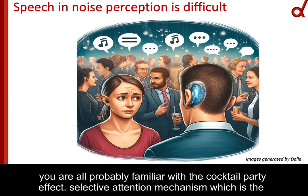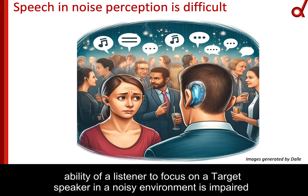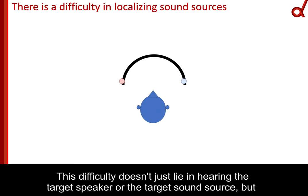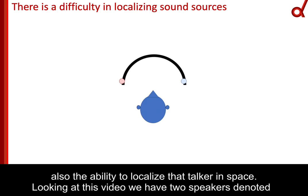You're all probably familiar with the cocktail party effect. Selective attention — the ability of a listener to focus on a target speaker in a noisy environment — is impaired in individuals with hearing loss, even with the use of a hearing aid such as a cochlear implant. This difficulty doesn't just lie in hearing the target speaker, but also in the ability to localize that talker in space.